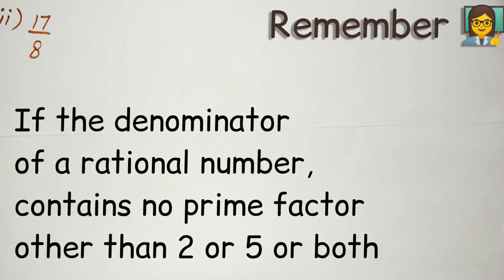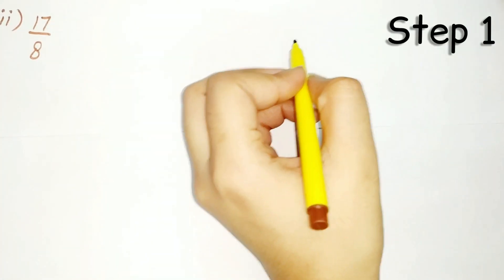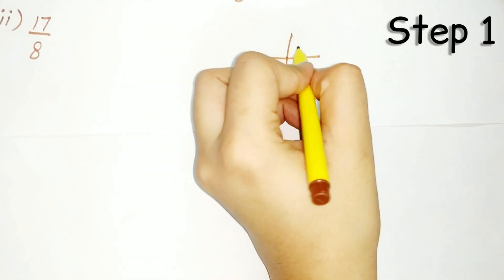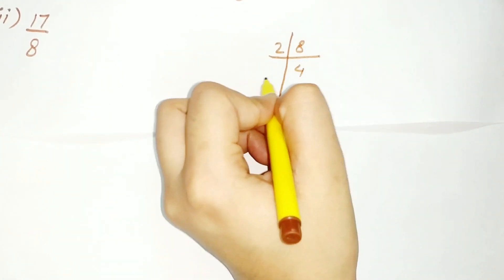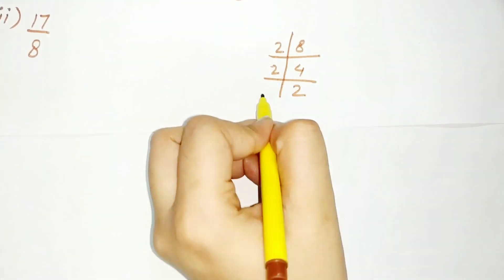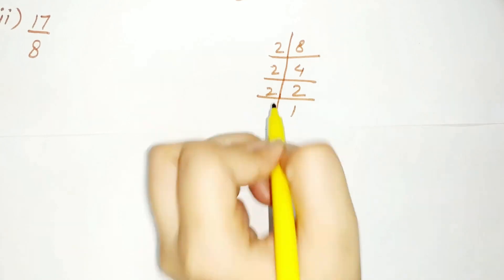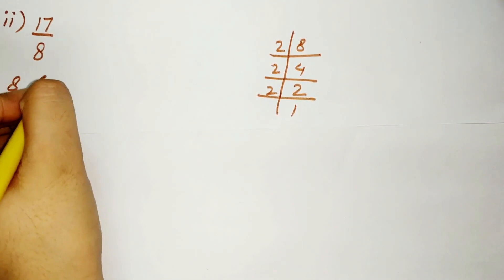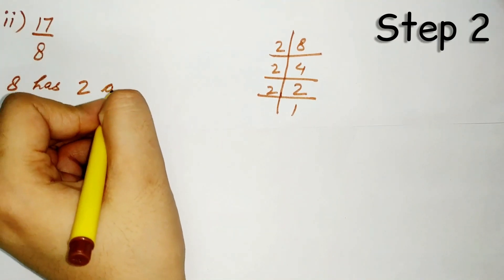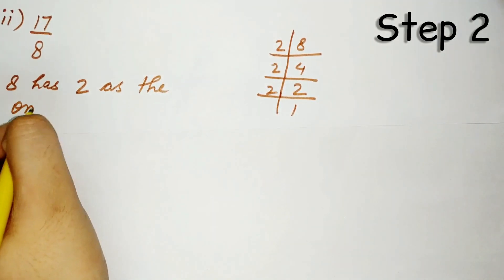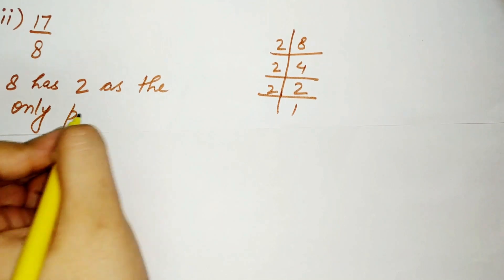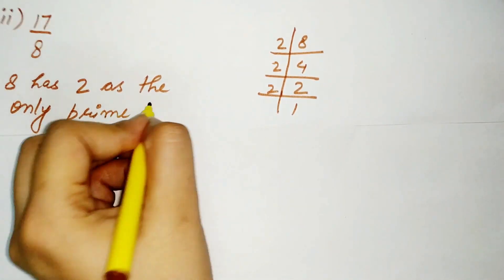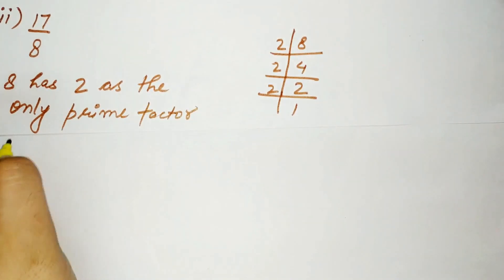The second part: find the prime factors of 8. So 8 has only 2 as a prime factor, and thus it is a terminating decimal expansion.